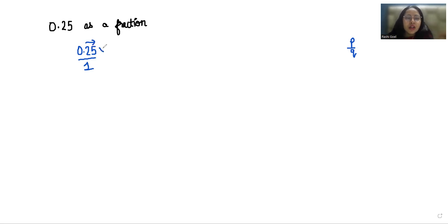There are two digits after the decimal, so we multiply by 10 two times, which is 100, in numerator as well as denominator. So our numerator becomes 25 while our denominator becomes 100. Now this is in fraction form and we are going to reduce it.